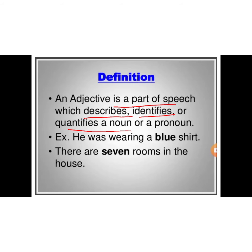Let us understand the definition of an adjective with the help of these two examples. He was wearing a blue shirt. In this sentence, the word shirt is a noun but the word blue is describing the shirt. So blue is an adjective. There are seven rooms in the house. In this sentence, the words rooms and house are nouns but the word seven is describing the rooms. So the word seven is an adjective.